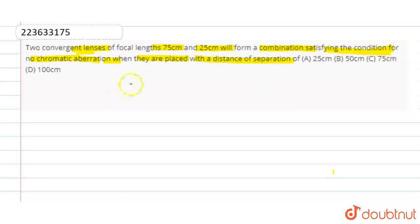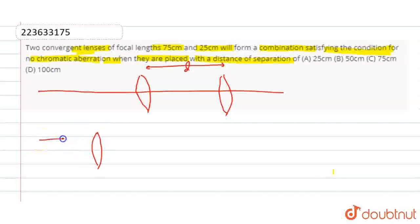First of all, remember the convergent lens or convex lens. There are two convergent lenses. Let me tell you what chromatic aberration is. The chromatic aberration is this way. Imagine that this is a convex lens. There is a white ray. What does white light do?